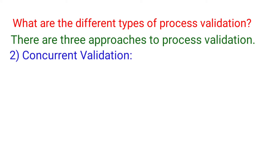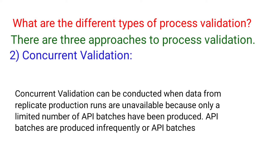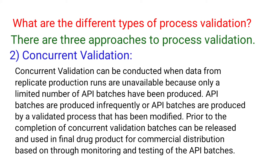Concurrent Validation can be conducted when data from replicate production runs are unavailable because only a limited number of API batches have been produced, API batches are produced infrequently, or API batches are produced by a validated process that has been modified. Prior to the completion of Concurrent Validation, batches can be released and used in the final drug product for commercial distribution based on thorough monitoring and testing of the API batches.